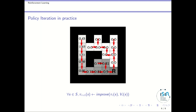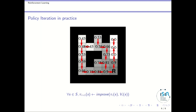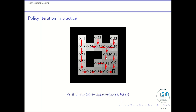Now that I know the value of my policy, I can improve it by noticing that in some cells a different action would yield a higher value — following the steepest gradient ascent. I make a few changes to the policy, then recompute its value function. Iterating: I change an arrow, recompute values, notice further improvements, make more changes. After four or five iterations of this policy evaluation and policy improvement cycle, I reach the optimal policy, which is equivalent to the one obtained with value iteration.